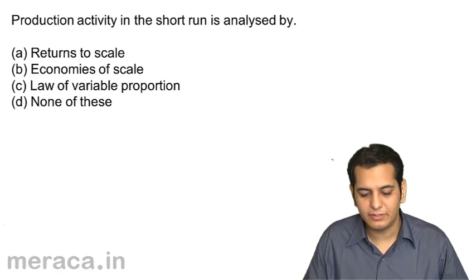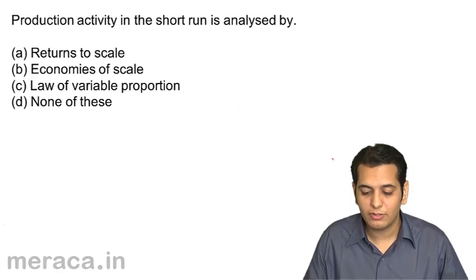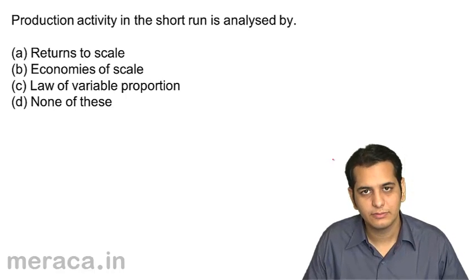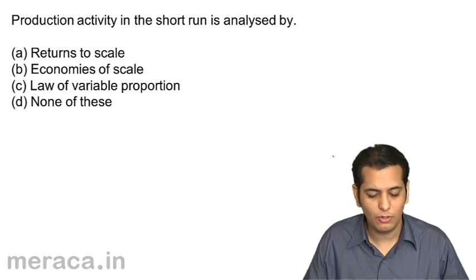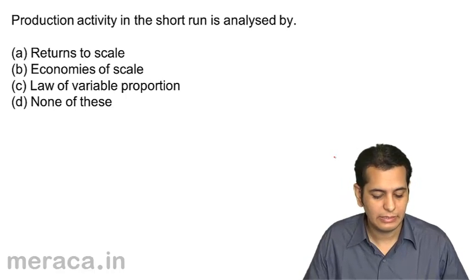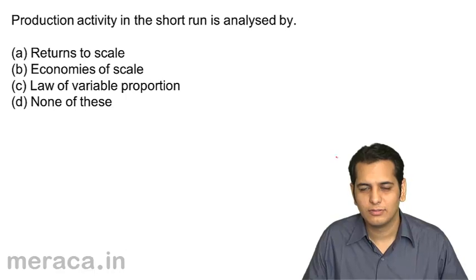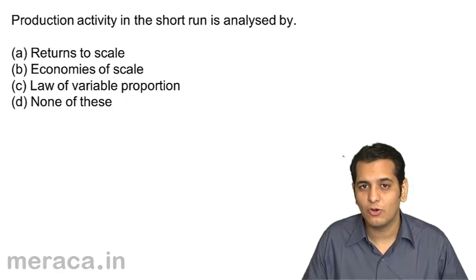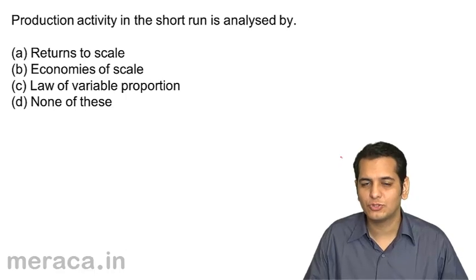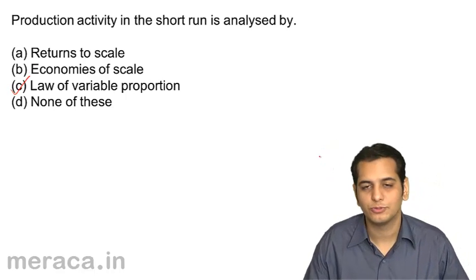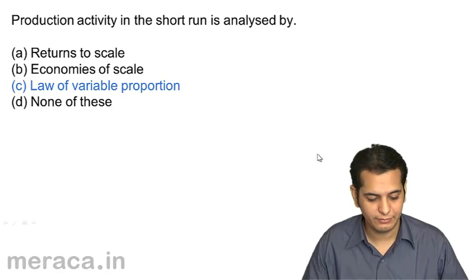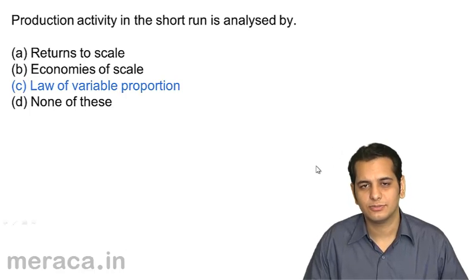Production activity in the short run is analyzed by: a) returns to scale, b) economies of scale, c) law of variable proportions, or d) none of these. The law applicable in the short run is the law of variable proportions. That's the correct answer.